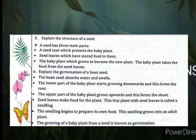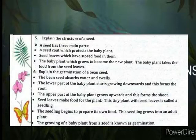Explain the germination of the bean seed. The bean absorbs water and swells. The lower part of the baby plant starts growing downward and forms the root. The upper part of the baby plant grows upward and forms the shoot. The seed leaves make food for the plant. The young plant with seed leaves is called the seedling. The seedling begins to prepare its own food and grows into an older plant.